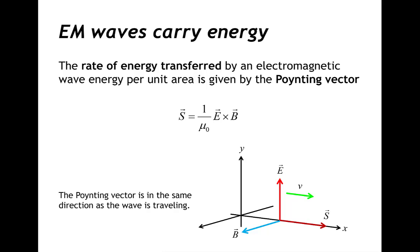One of the properties of electromagnetic waves is that they can carry energy, and the rate of energy transferred by an electromagnetic wave per unit area is given by something we call the Poynting vector. The Poynting vector is formed from the cross product of the electric and magnetic fields, which tells you the direction of the velocity of the electromagnetic wave. So the Poynting vector is a vector that points in the direction of the electromagnetic wave, and it is a measure and representation of how an electromagnetic wave transfers energy.